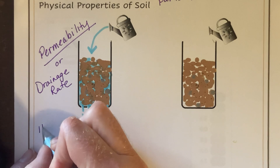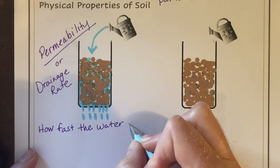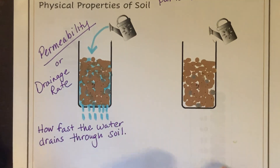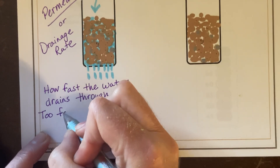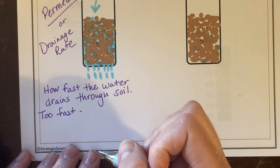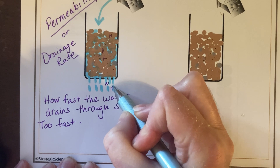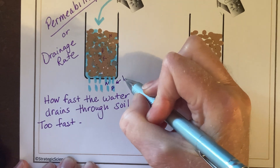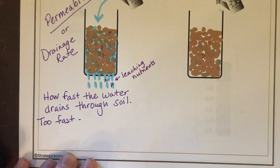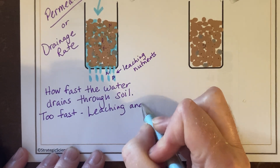If the permeability is too fast, the plants won't get enough water — it drains too fast before the plant roots can absorb it — and it can leach out nutrients. Leaching is when nutrients like NPK come out of the soil too quickly. Plants won't get enough water and the nutrients leach away.